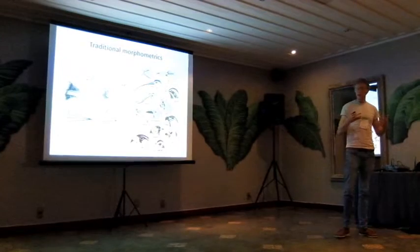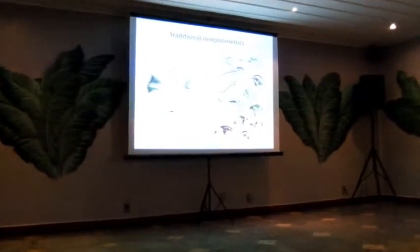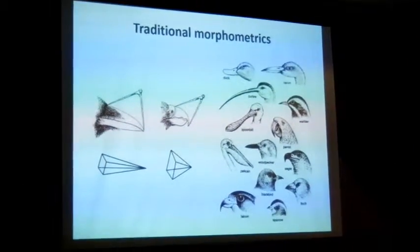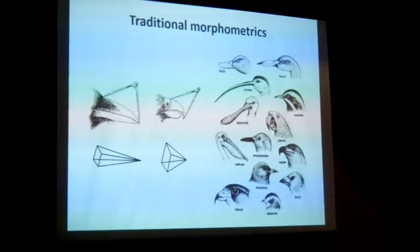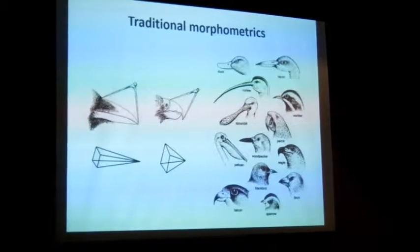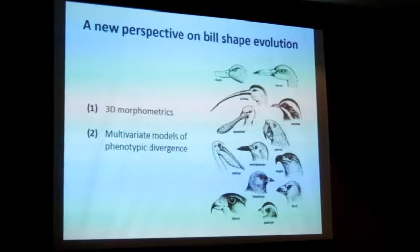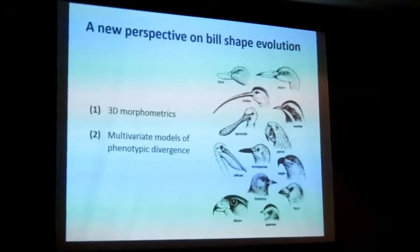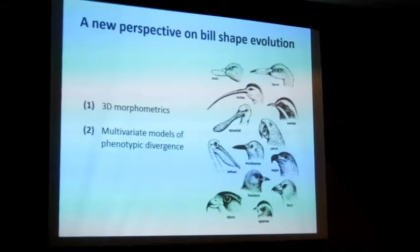One way in which people have traditionally tried to get at this question is by using linear morphometric measurements of birds. However, the extent to which this approach is able to capture the huge range of diversity in avian bills that we observe is unclear. So one of the initial aims of our project was to provide a new perspective on bill shape evolution by combining a geometric morphometric approach based on 3D scans of bill structure with multivariate models of trait evolution.